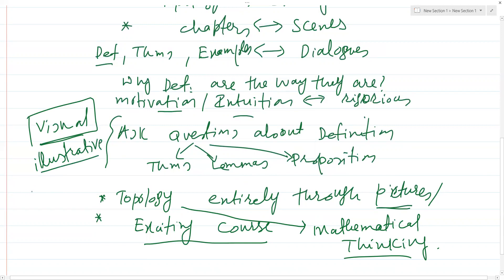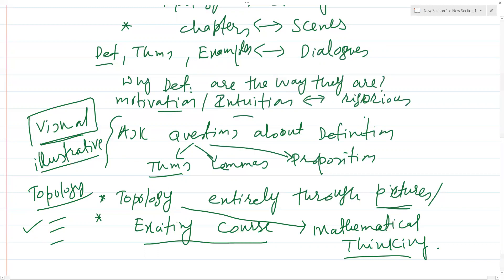I'm going to try my best to be more and more visual and illustrative about the abstract definitions and theorems, and talk about why things in topology are the way they are. For example, why the definition of a topology requires these three axioms and not some other axioms. In our next video I'll talk about the bigger picture of topology.